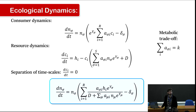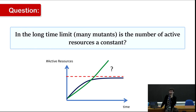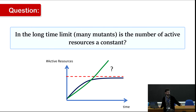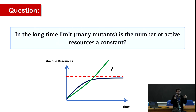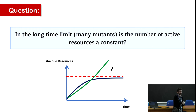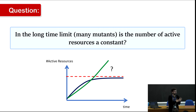Our question is: in the long-time limit — after I include many many mutants in my system — what happens to the number of new species or strains? What happens to the number of active resources, meaning resources that are actually being consumed by some species? Is this something that reaches a limit, or does it explode?